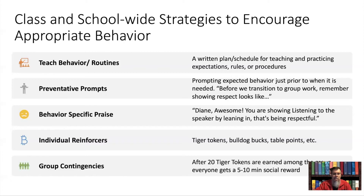Individual reinforcers are important — if you have a token economy or a way for kids to earn points toward a reward, find something that reinforces each individual student, because what works for one may not work for another. Also use group contingencies: if the whole class performs well for the week, they earn something at the end of a predetermined time. For example, I would offer a popcorn party on Friday if all students met their individual points for the week. They worked together, supported each other, and it wasn't based on just one individual.